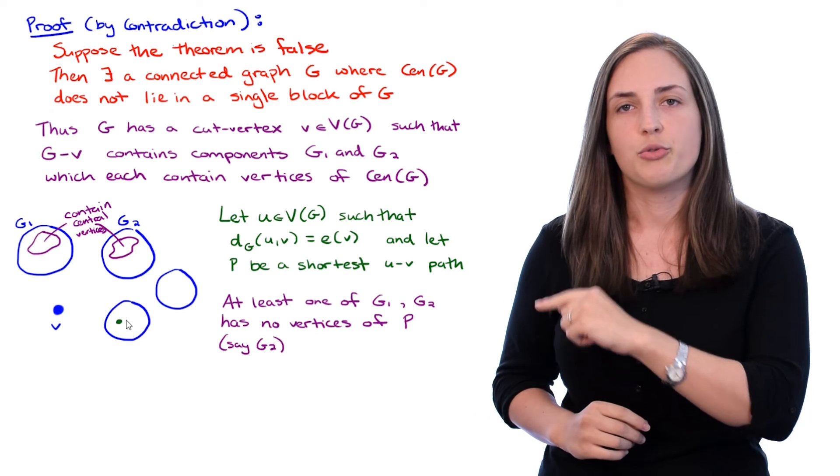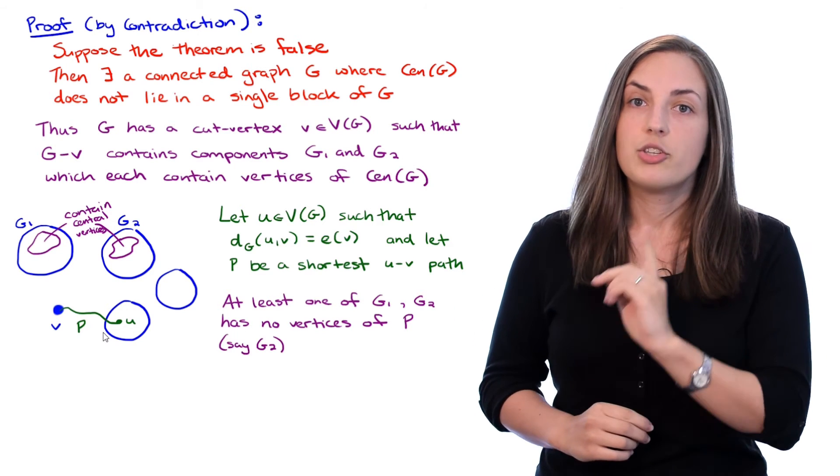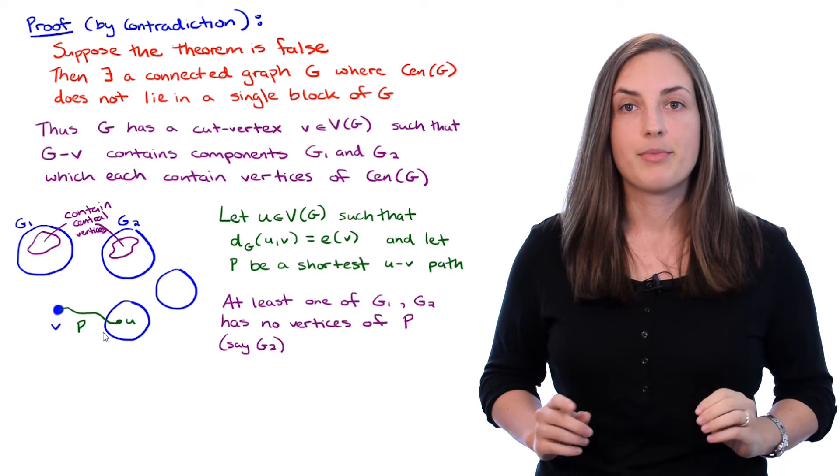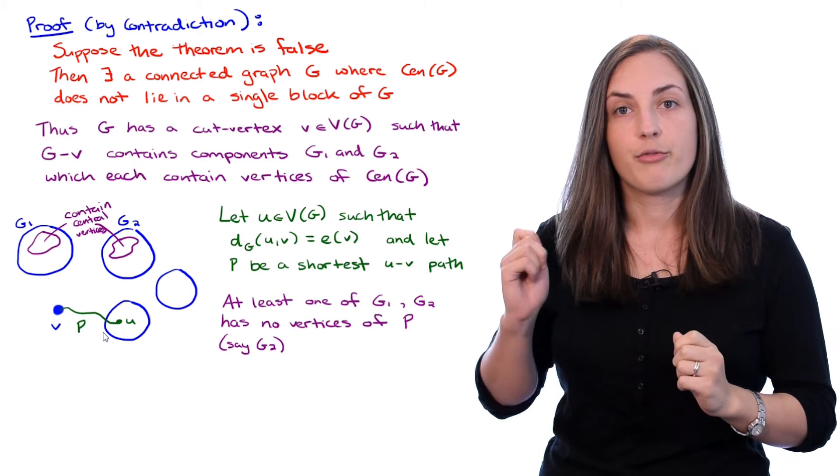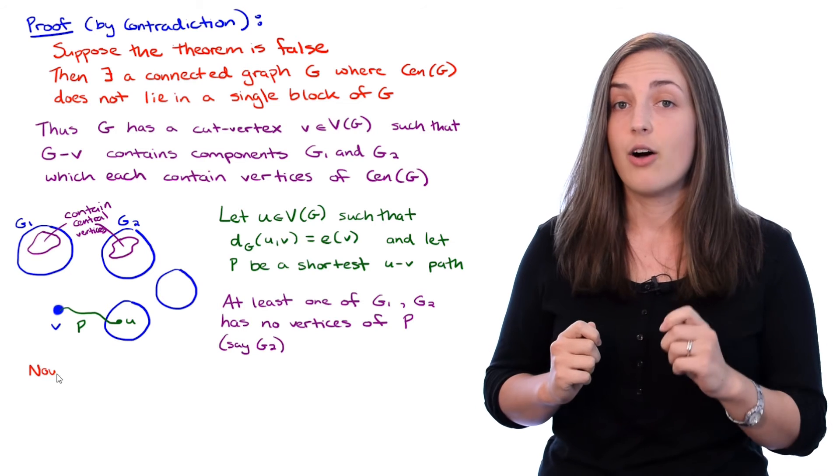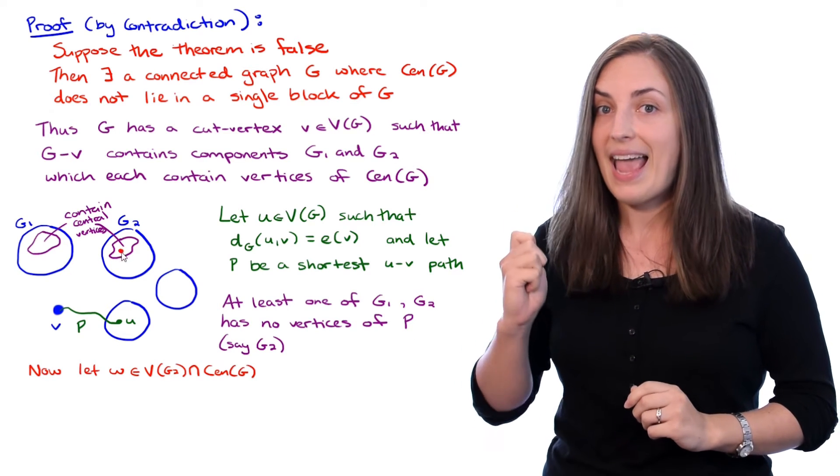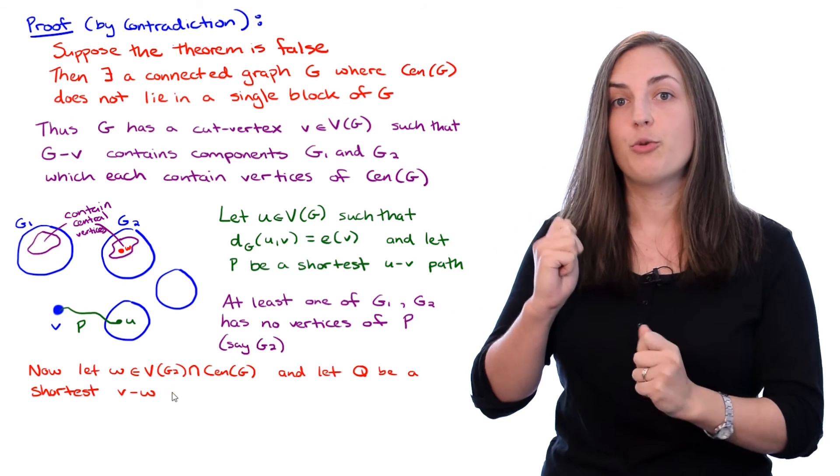So I'll draw vertex U somewhere with a path P to V. Notice U could have belonged to component G1 but the proof works out exactly the same. The important thing to keep in mind is that nowhere on P are there vertices in G2. Now let W